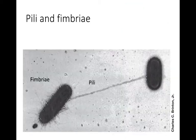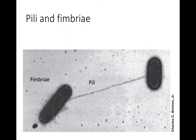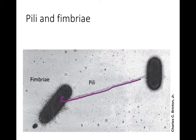The role of fimbriae is for attachment, as is the role of pili — pili being the plural of pilus. The difference between the two is that fimbriae are more fine hair-like structures, whereas pili are hollow protein tubes coated with protein on the outside with a hollow middle. This allows for transfer of genetic information from one cell to another through a process known as conjugation, which we'll come back to later in the semester.